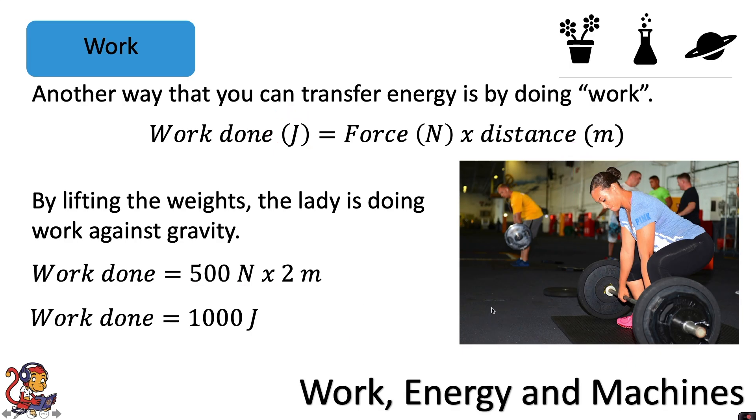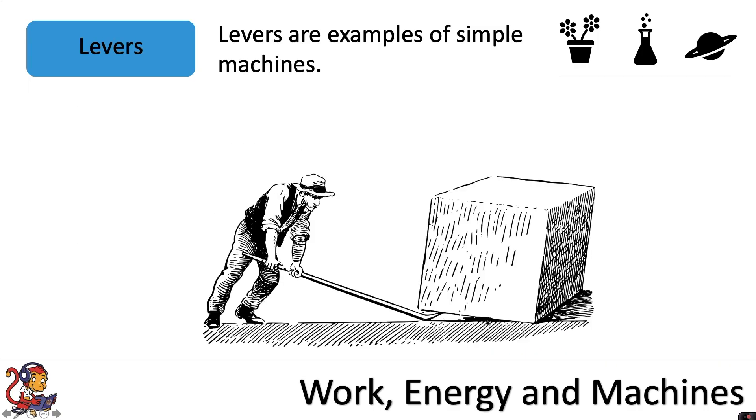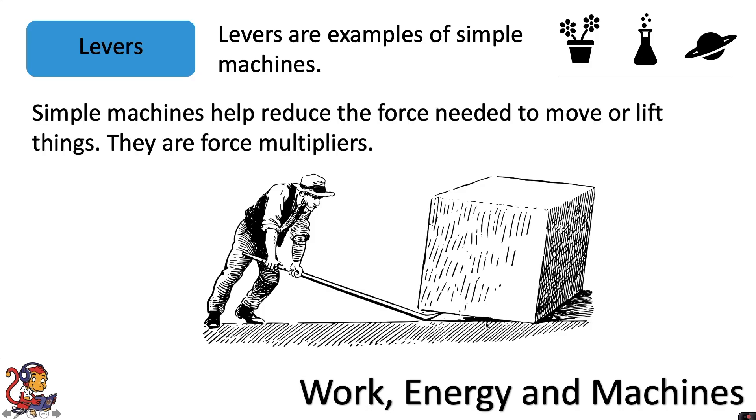When it's too difficult for a human to do work in terms of pushing or lifting an object, we have invented simple machines to help us. Levers are examples of simple machines. Simple machines help reduce the force needed to move or lift things. They are force multipliers.